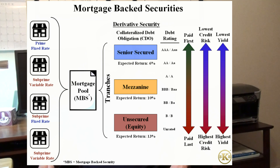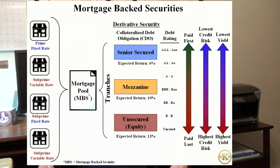A hypothetical set of CDOs might include senior secured debt with an expected return of 6%, mezzanine debt with an expected return of 10%, and the lowest level, unsecured debt, with a higher expected return of 13%.